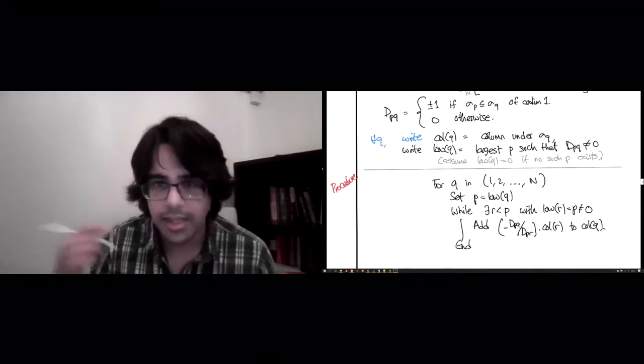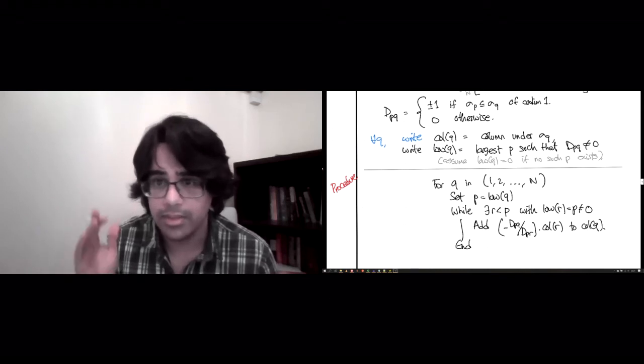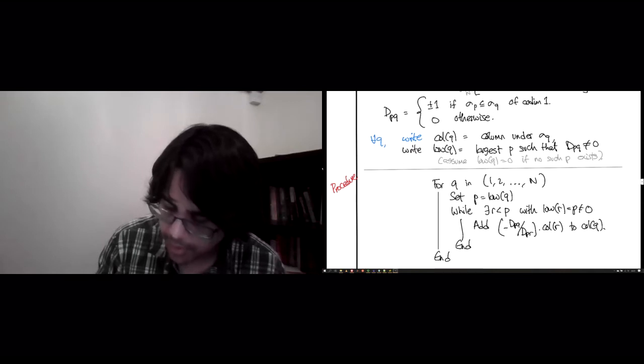So we keep doing this iteratively until there is no smaller R sharing the same low as the lowest non-zero entry of column P. And that's it. That's the end of the algorithm. Nothing else.